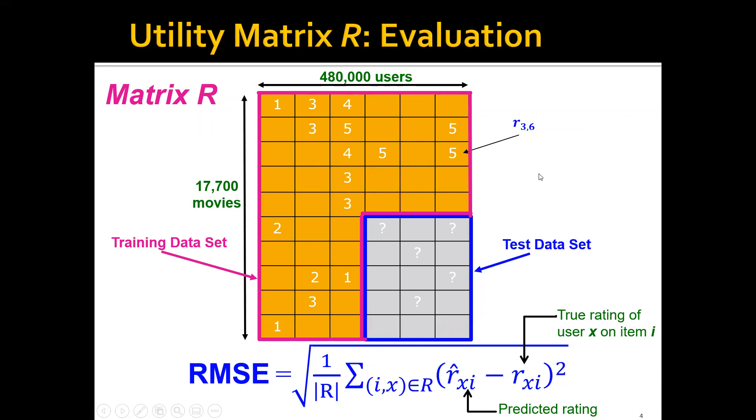Typically, as always, we will withhold part of the data as the test data set and use all the others as the training data sets. The question that Netflix asks is that if you're given this training data set, can you provide the predictive ratings for these numbers such that the RMSE of these numbers are minimized? Here, R hat xi is the predicted rating, and R xi is the true rating of user x on item i.